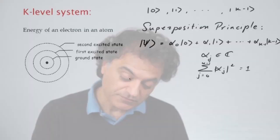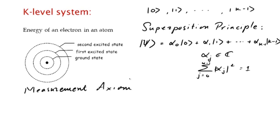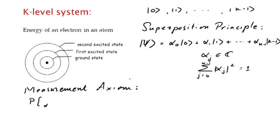As we saw last time, interpreting what this state means is not very easy, because it's hard to make sense of what it means when we say the electron is in the ground state with amplitude minus 1 over 2, or 1 over 2 plus i over 2. One way we can interpret this is through the measurement axiom, which says that when we measure the system, the probability that the outcome is j is the magnitude of alpha j squared.